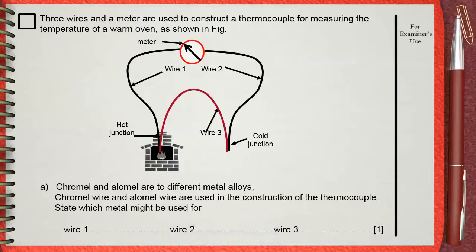We had a question on thermocouple before. Remember that wire one and wire two are made of the same metal. Wire three is a different metal.